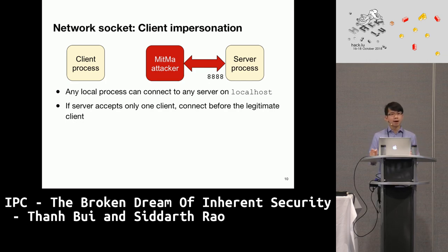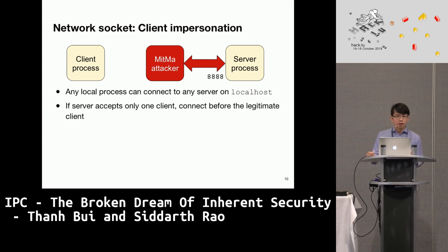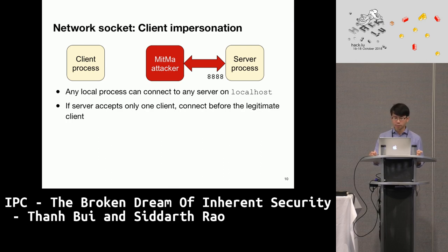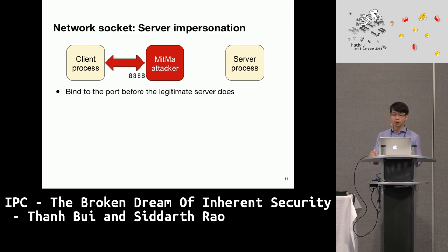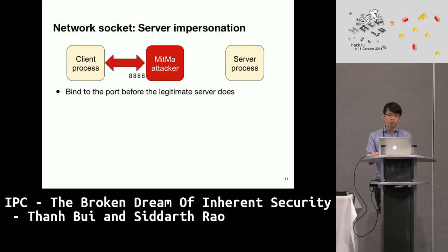One obvious thing the Man-in-the-Machine attacker can do is client impersonation. The attacker can find the port number from documentation, source code, or simply by running netstat, and connect to the server as a client. In cases where the local server accepts only one connection, if the attacker comes later its request will be discarded; so the attacker just needs to connect before the legitimate client does. Is it also possible to do server impersonation? Yes — the attacker just needs to start the local server before the legitimate server does, and there is nothing to stop this attack. The client would not notice it connected to the wrong server and would simply start exchanging information.